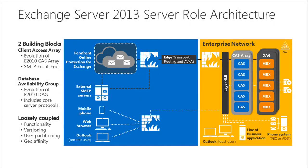First, how has the new Exchange Server 2013 architecture changed from some of our previous server versions? We've moved from five server roles to two specific server roles: the client access server role and the mailbox server role. Both have changed fundamentally from the past two releases. The client access server role is now simply an authentication, proxy, and redirection server and is completely stateless from a protocol session perspective. The mailbox server role does the storage of mailbox-related data, but also does processing and rendering for all client connectivity, transport-related functions, and unified messaging.